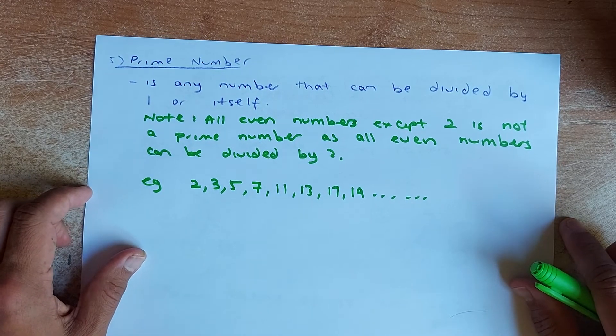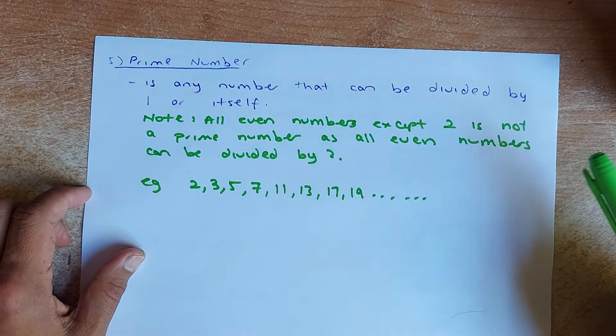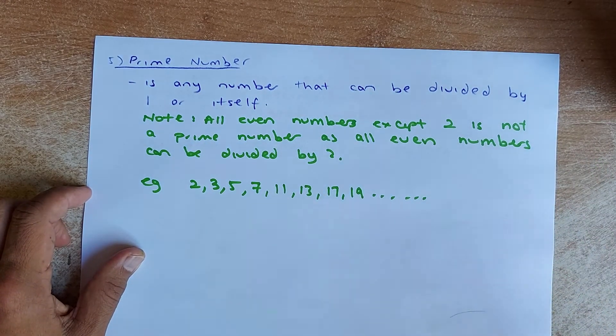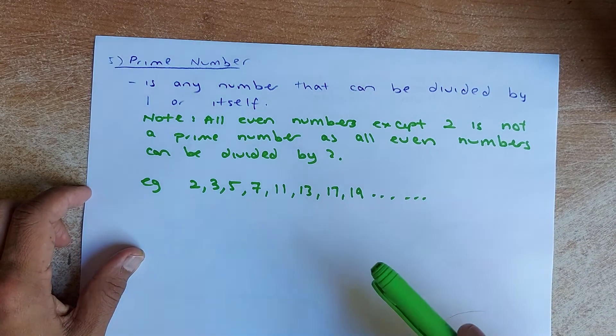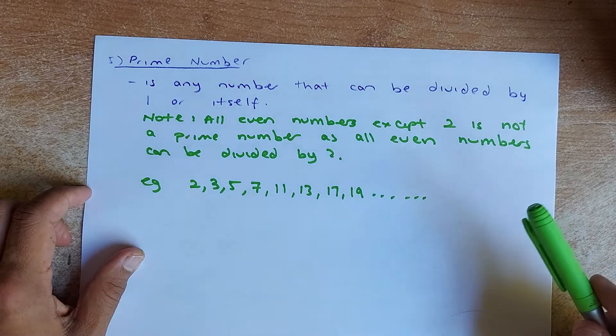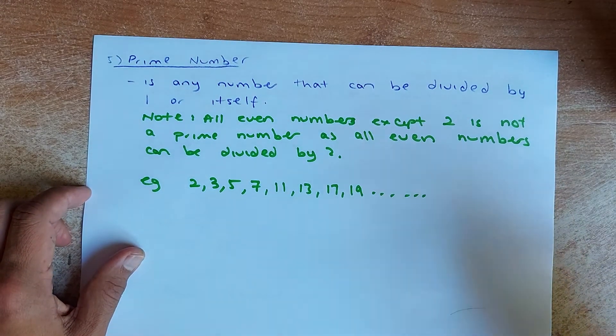You have learned this in primary school. So prime numbers are any numbers that can divide by 1 or itself. So you need to note this: all even numbers 4, 6, 8, 12 are all not prime numbers because they can be divided by itself, divided by 1, and also divided by 2.